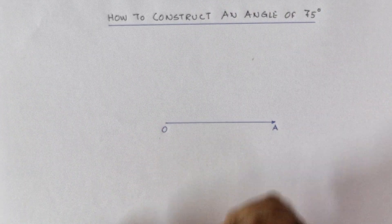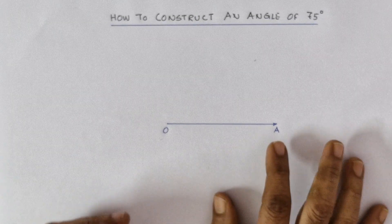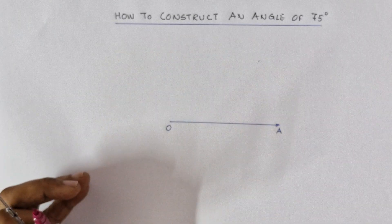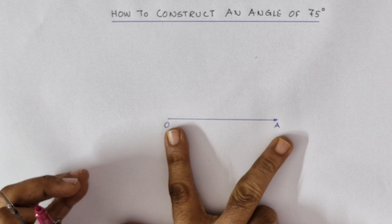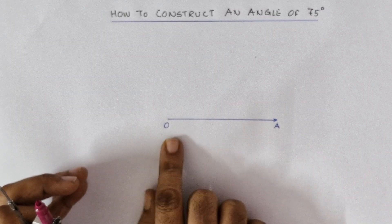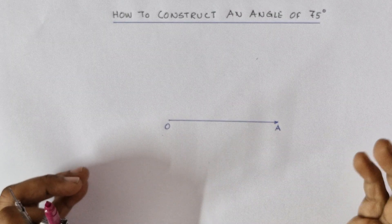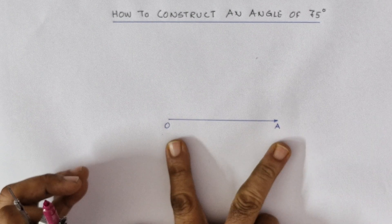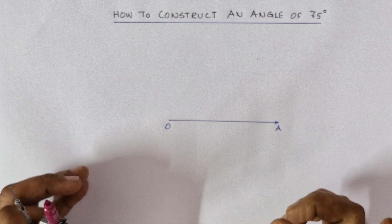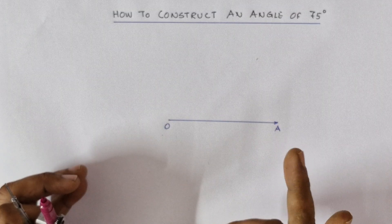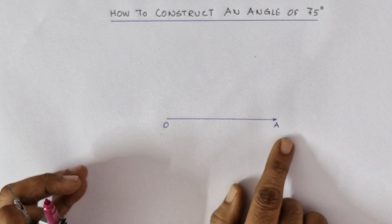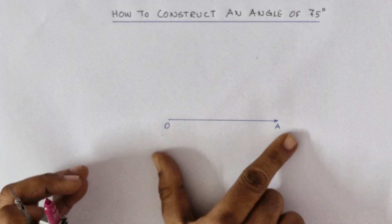How to start: ordinarily in construction of an angle you should start with an arm of the angle. I have already constructed the arm of an angle. Unless otherwise instructed, just draw an arm of an angle. In this case I'm showing you by drawing an arm of an angle OA, with O being the vertex of the angle.